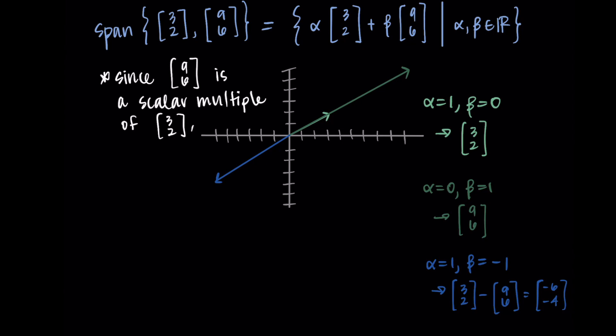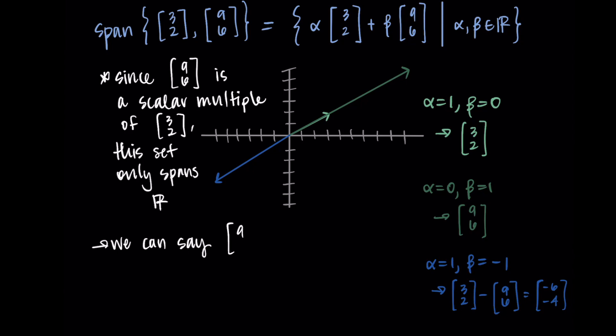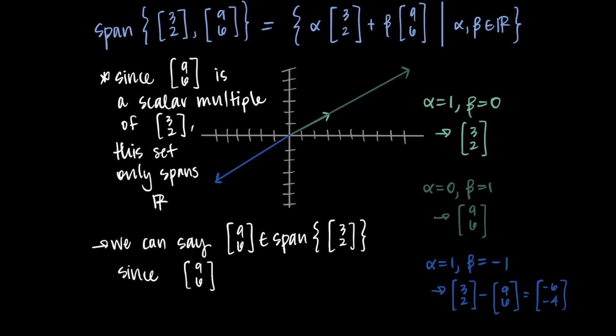What's happening here is that [9,6] is just a scalar multiple of [3,2], so this set still only spans R — the second vector isn't adding anything new to the span. Mathematically, [9,6] is in the span of {[3,2]} because [9,6] = 3 * [3,2]. Since one vector is a scalar multiple of the other, the spans are equal. Two vectors, but it still only spans R because one was a multiple of the other.